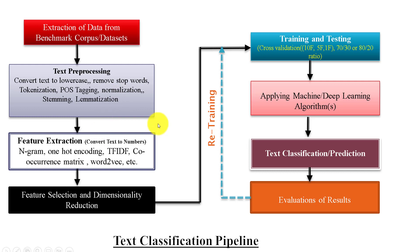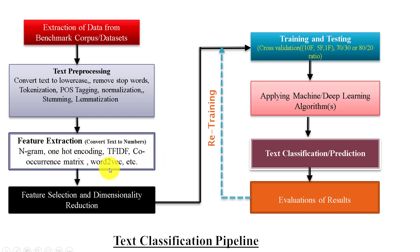After text preprocessing, the next process or step is feature extraction. In this process, we convert text into numbers. There are various methods available to convert text into numbers like n-gram scheme, one-hot encoding method, TF-IDF, co-occurrence matrix, Word2Vec, etc. There are several other methods in this feature extraction list.